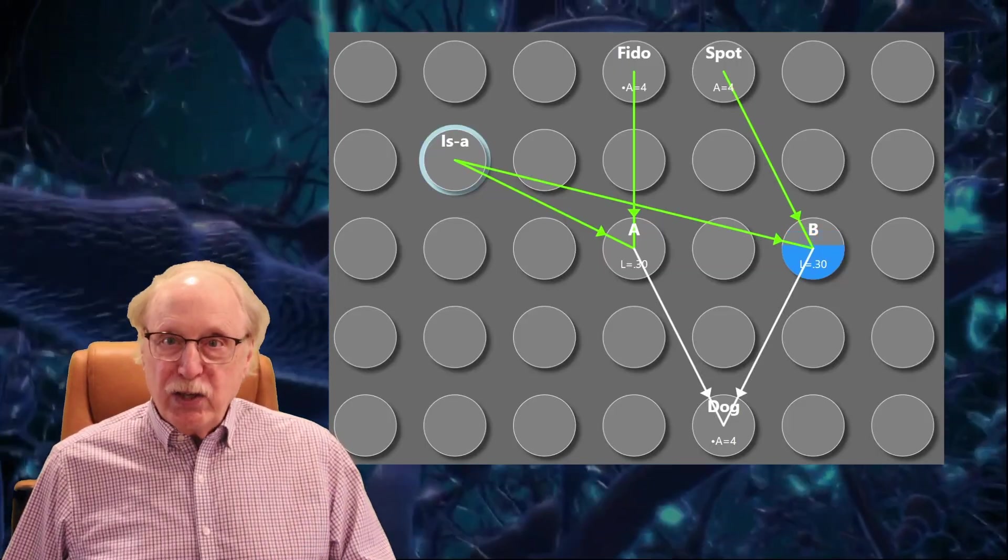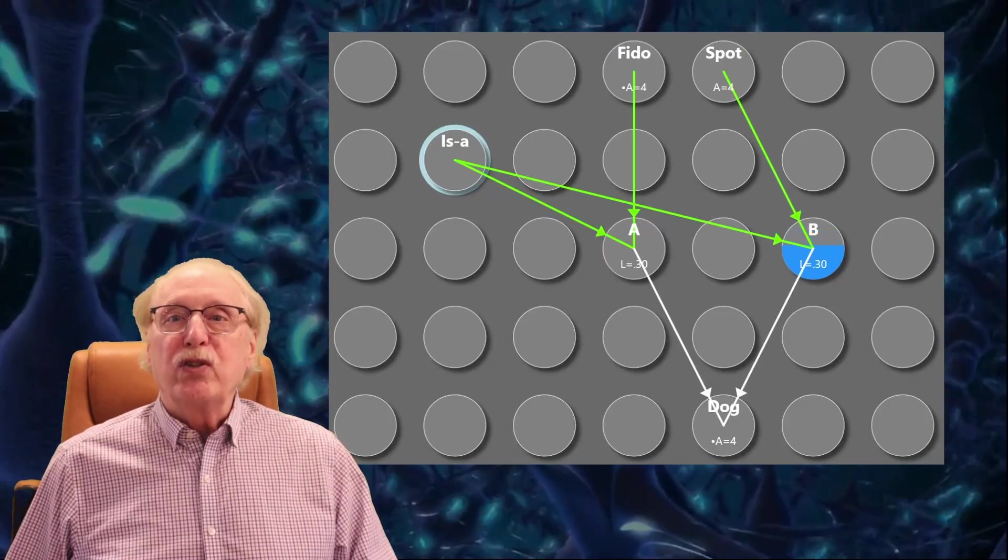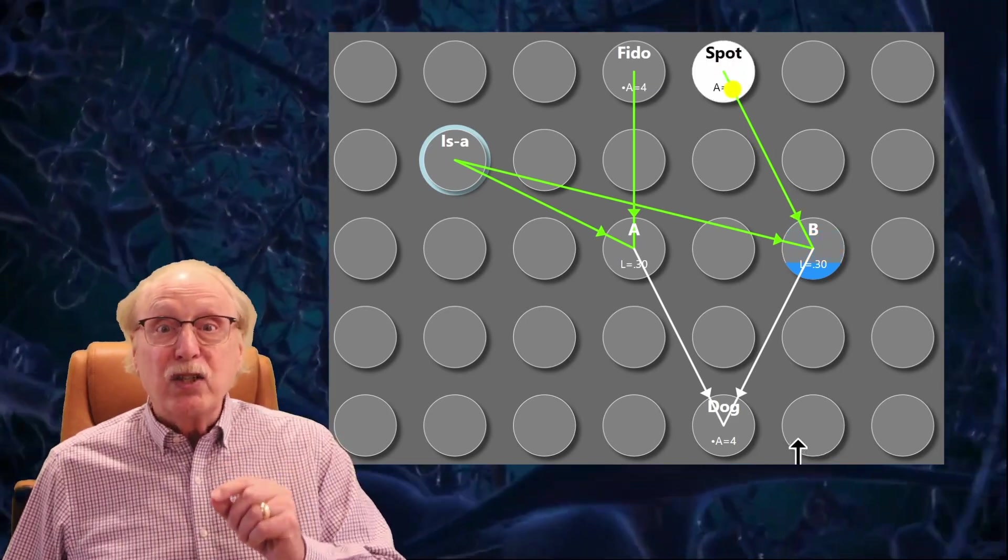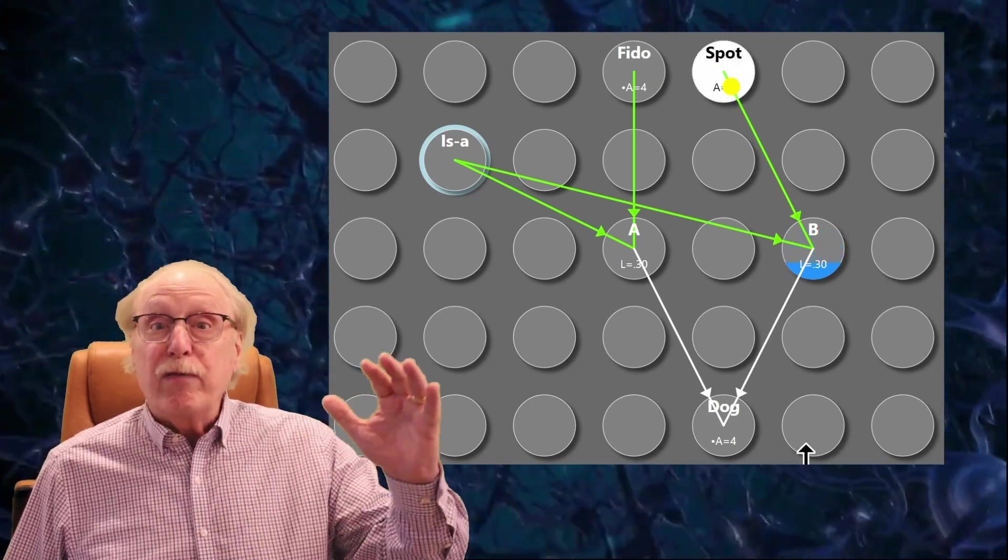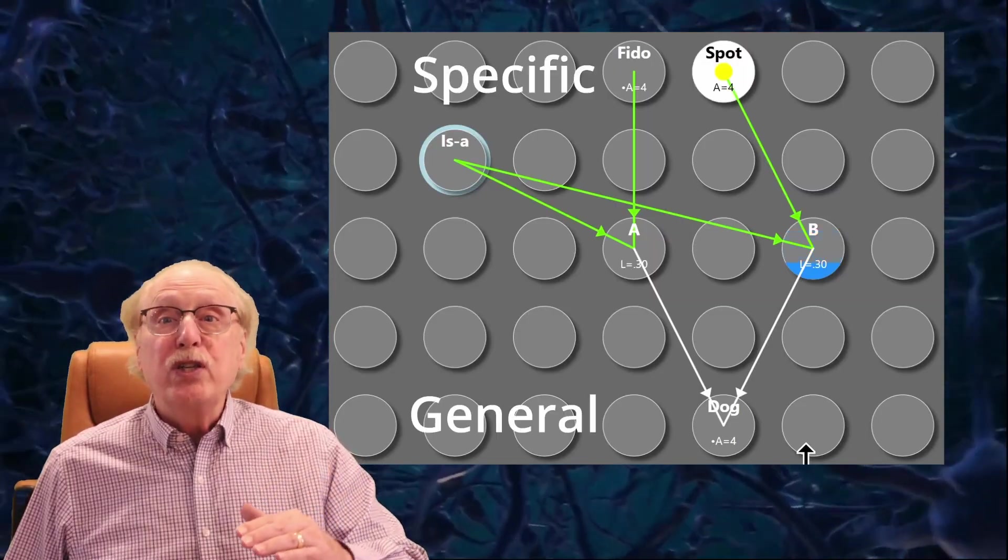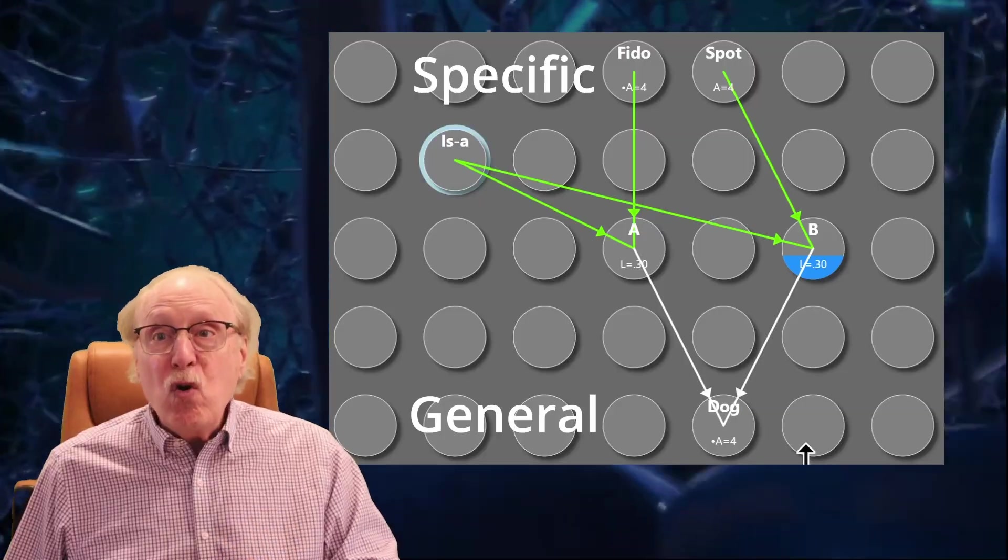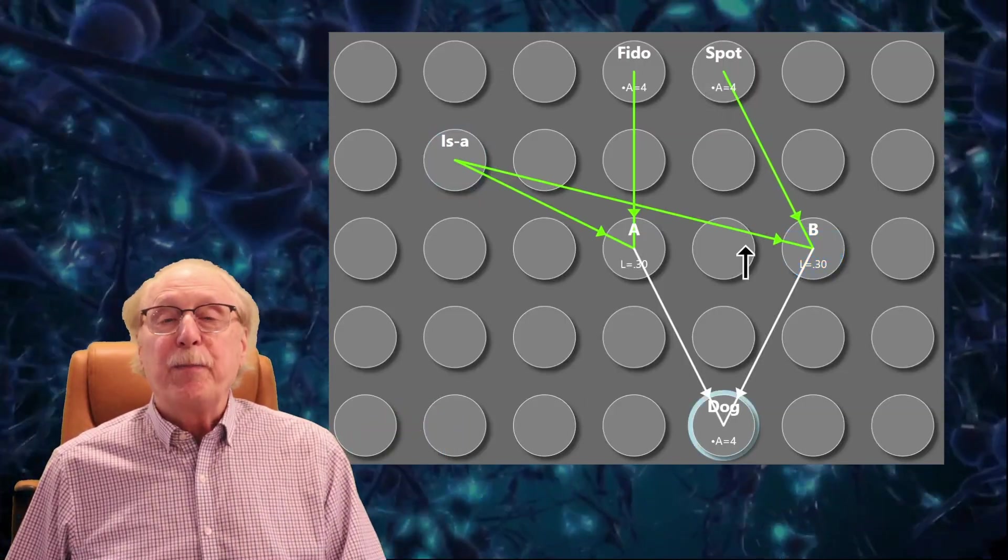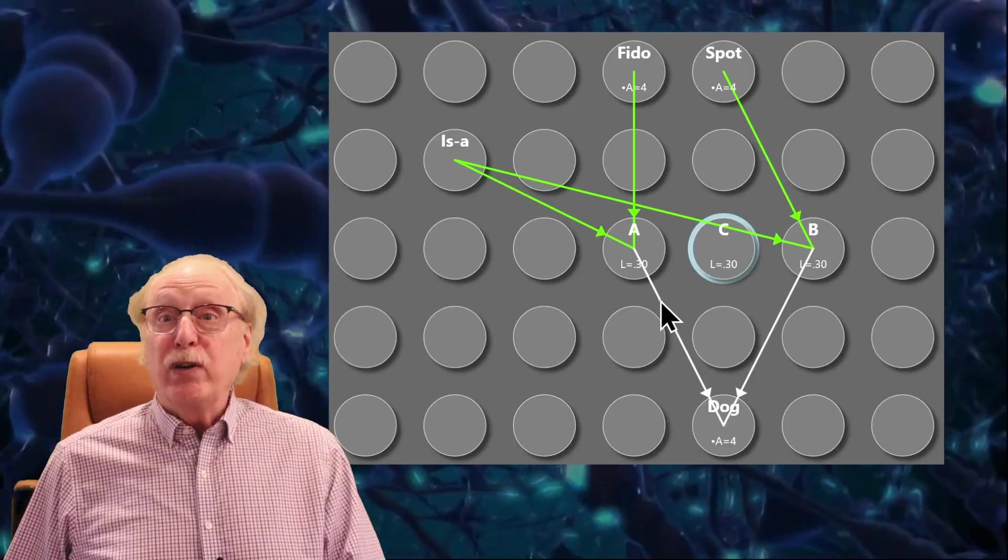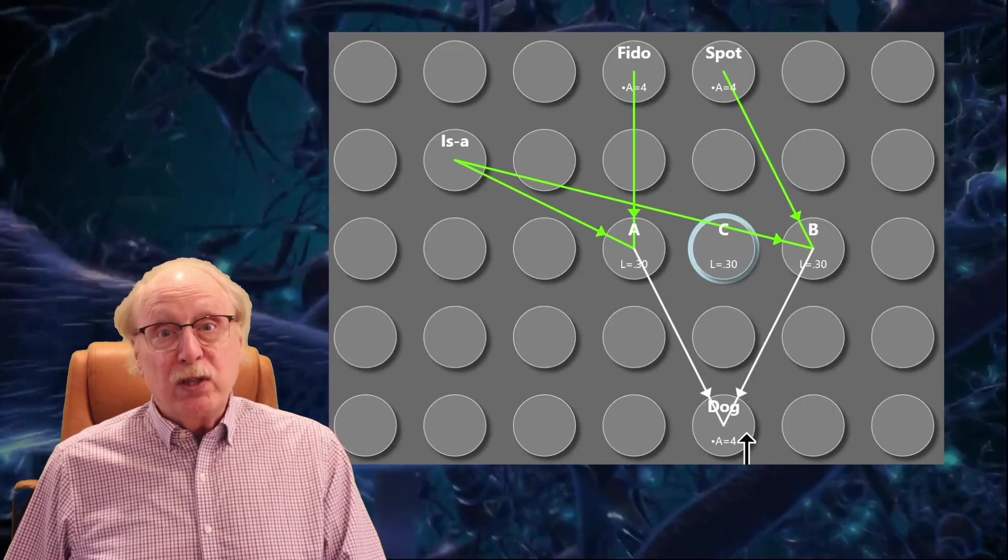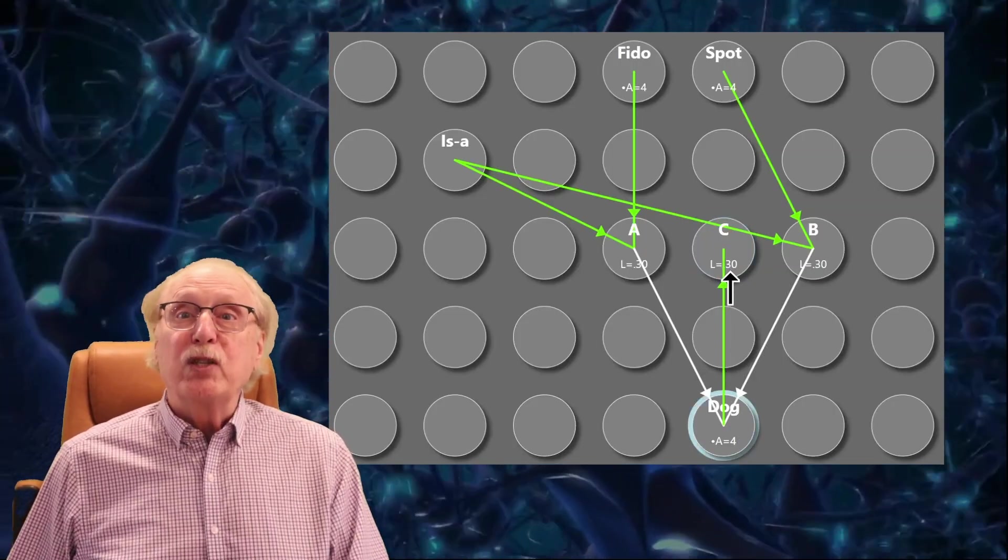If I were to ask you to name some dogs using this circuitry, you would be unable to comply because there are only connections going from the specific to the general. And because neurons are one way, there is no way to follow these connections in reverse. But I can add another intermediate neuron C with similar circuitry going in the opposite direction.